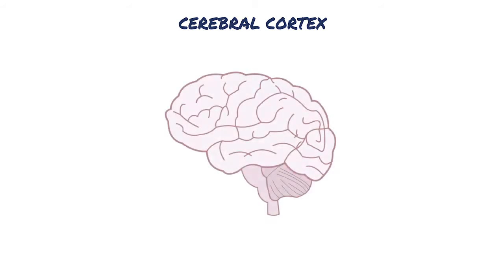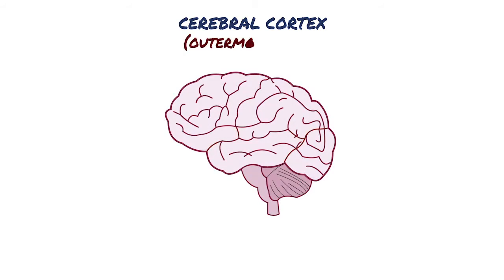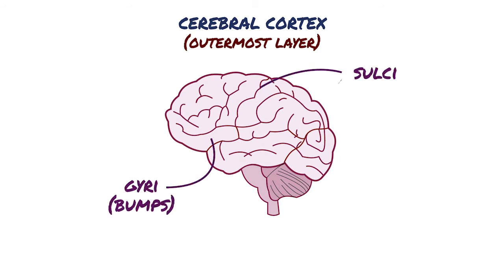The brain's cerebral cortex is the outermost layer that gives the brain its characteristic wrinkly appearance. In humans, the lobes of the brain are divided by a number of bumps and grooves. These are known as gyri, or bumps, and sulci, or fissures. The folding of the brain and the resulting gyri and sulci increases its surface area and enables more cerebral cortex matter to fit inside the skull.